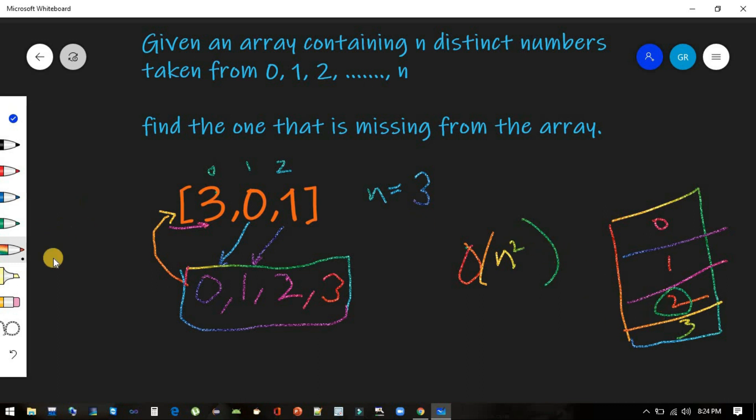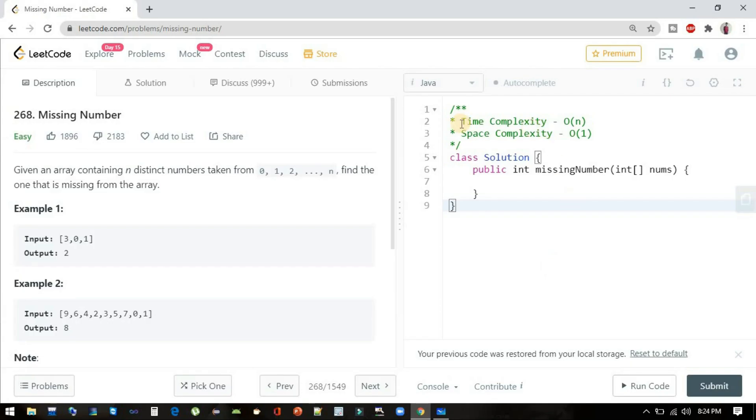So in that case our time complexity will be O(n), but our space complexity will also be O(n). But what we are achieving here is time complexity O(n) and space complexity O(1). How can we reduce this extra hash set?